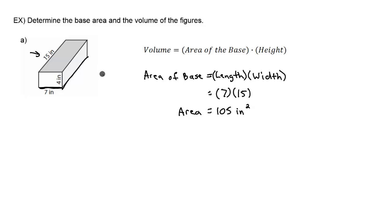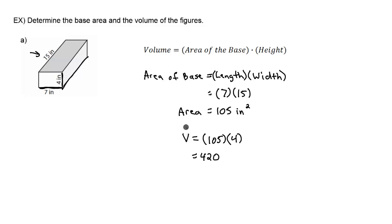To find volume, that's a three-dimensional property, so we add a third dimension — the height. The height of this prism is four inches. Volume equals the area of the base times the height, so 105 times four gives us 420. Volume is a cubed unit, so the volume is 420 inches cubed, and the area of the base was 105 inches squared.